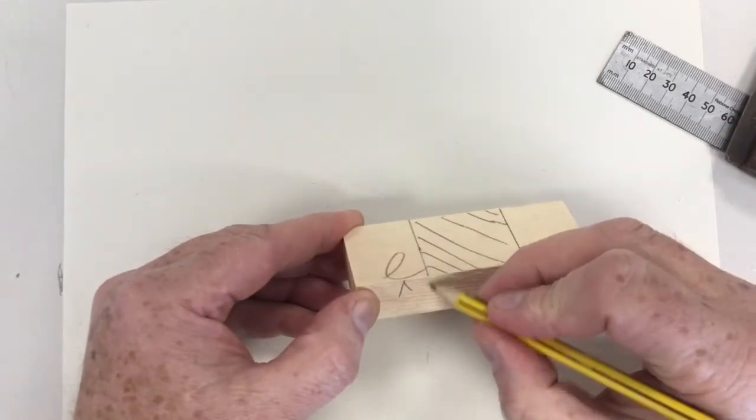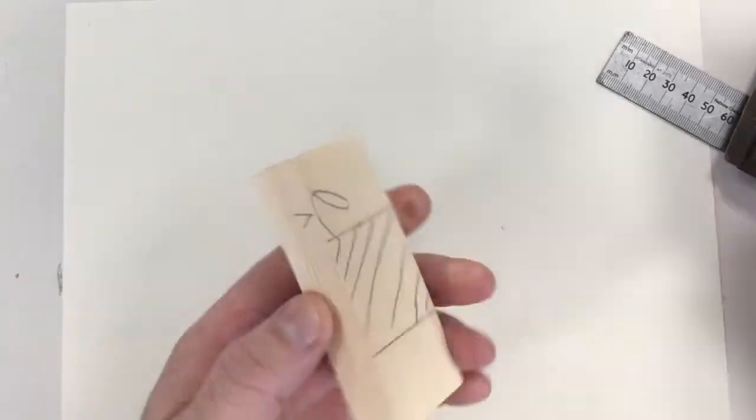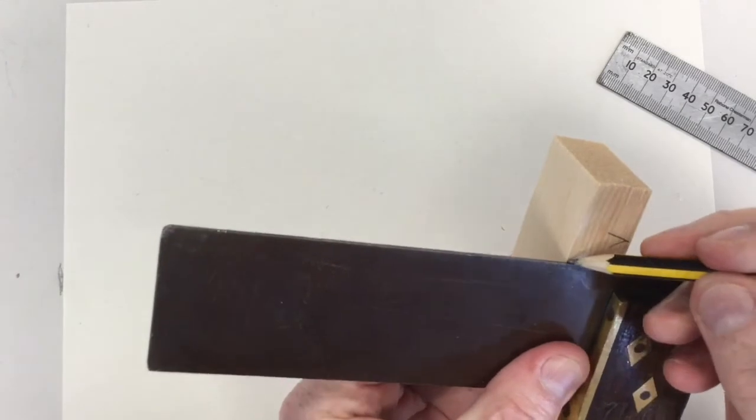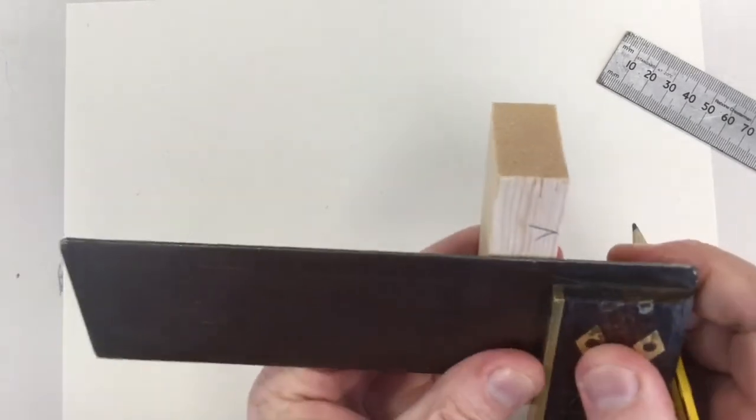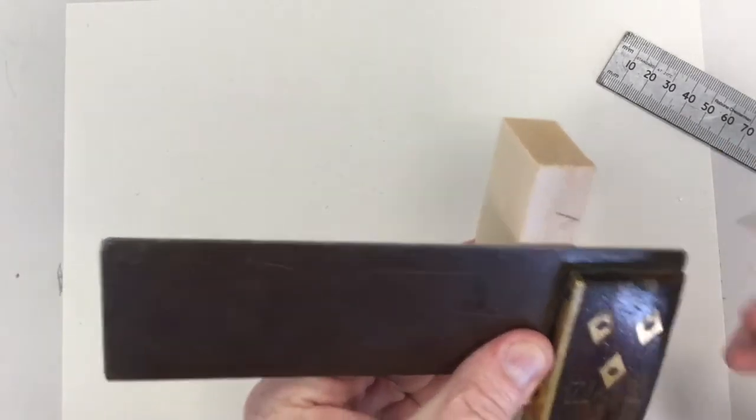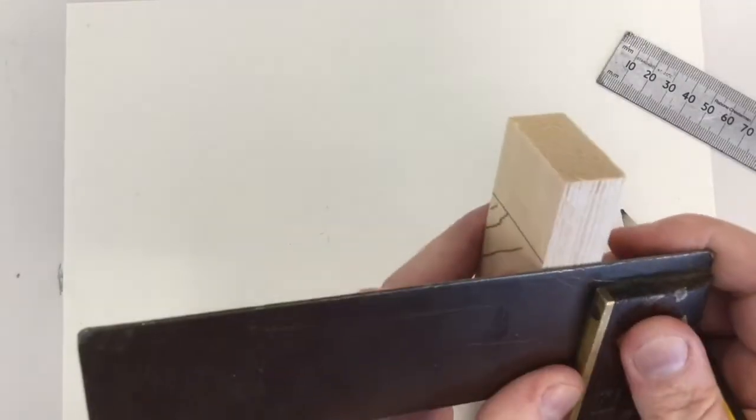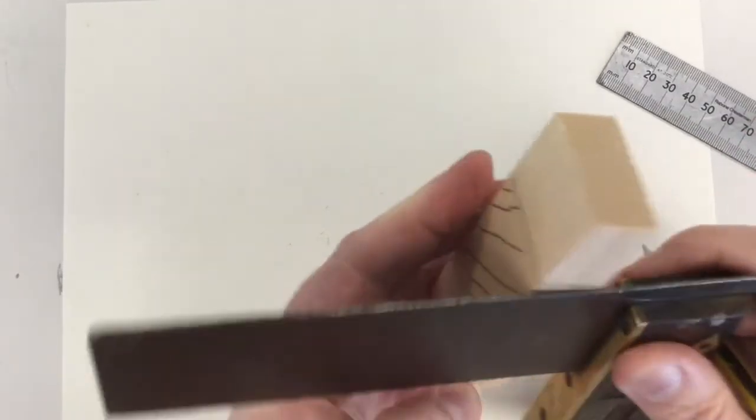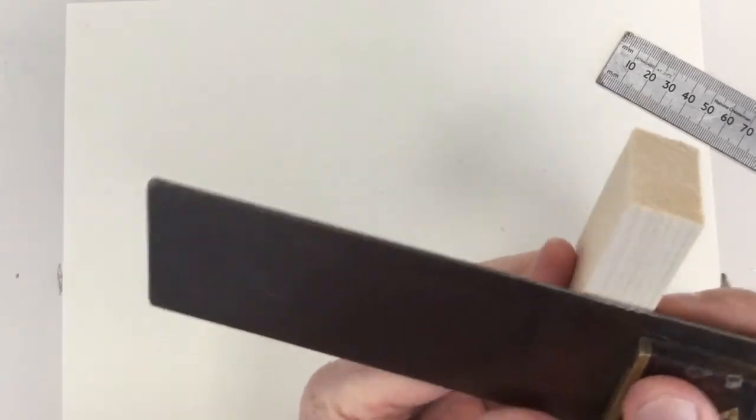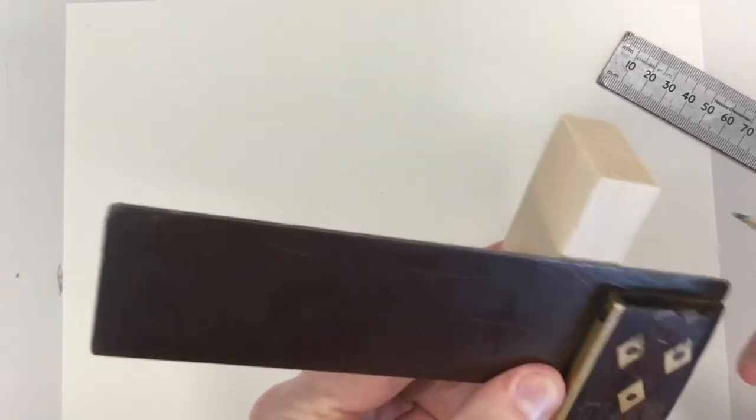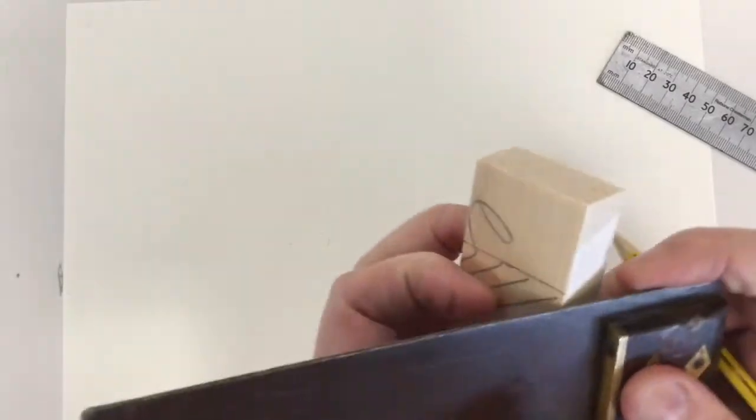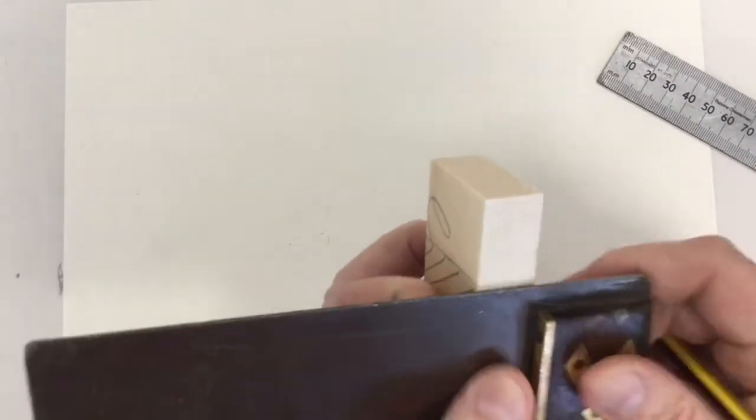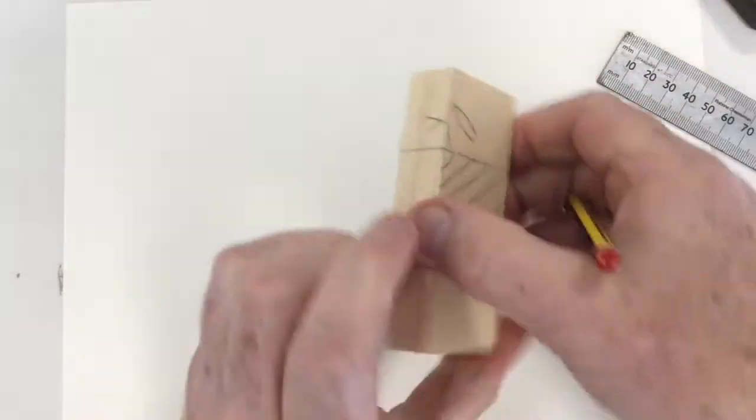Now we need to extend these lines down the side. So again, use your tri-square and extend these lines down. Making sure the wood's nice and tight against the tri-square. Extend these lines down. And you're going to do that on both sides. So that's piece number one.